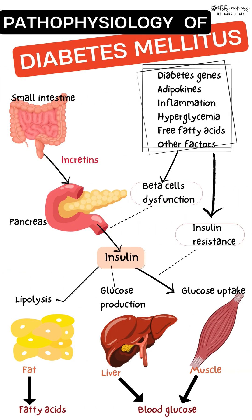Regarding pathophysiology, insulin is secreted by beta cells of the pancreas to maintain glucose levels. In Type 1 diabetes, there is destruction of these beta cells leading to insulin deficiency, while in Type 2 there is insulin resistance. This beta cell dysfunction reduces glucose utilization, leading to hyperglycemia affecting various organs.